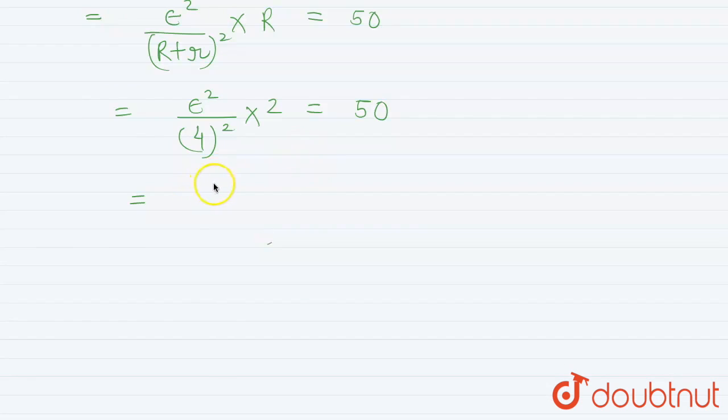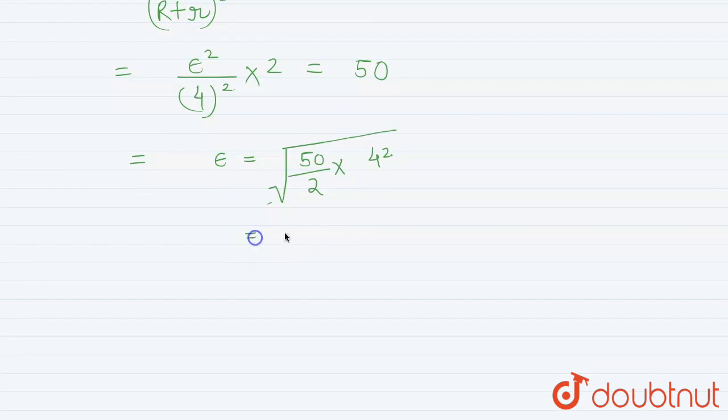So from this our epsilon e comes out to be 50 by 2 into 4 squared. So this is 25 into 16 root, which is 5 into 4. So our epsilon e, which is emf, comes out to be 20 volts.